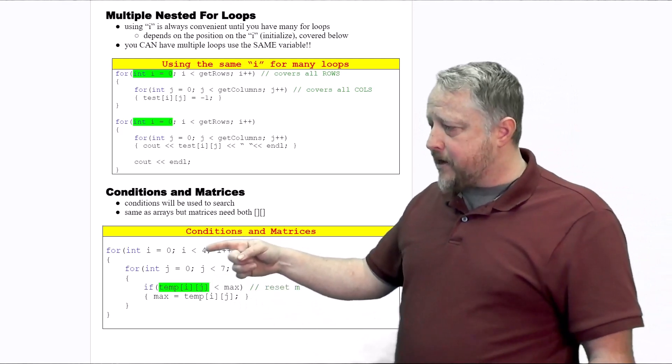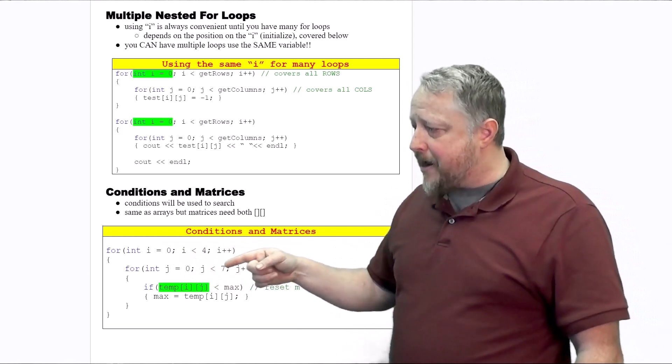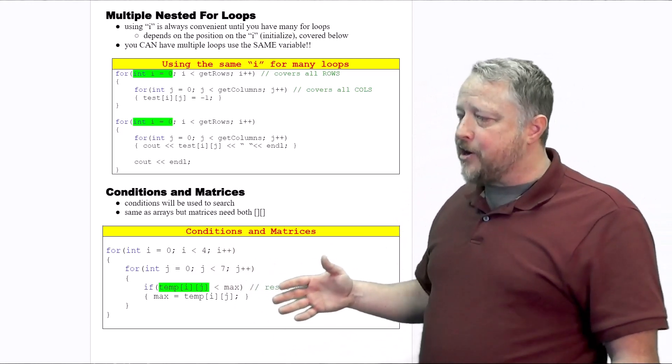I can't put it in the outer loop because that only would give me I. I need both I and J in order to give me some location that we're trying to find a value in.